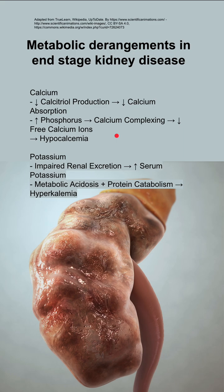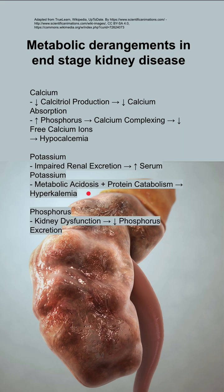For potassium, you have impaired renal excretion of potassium, leading to increased serum potassium. This is one of the main reasons you get dialysis, because increasing serum potassium can lead to cardiac problems. You also have metabolic acidosis and protein catabolism, which can further lead to hyperkalemia.